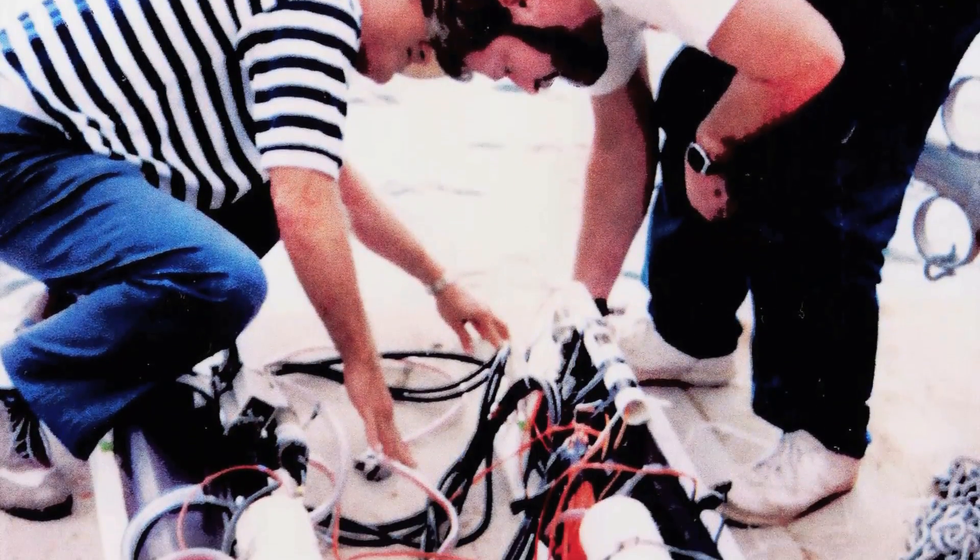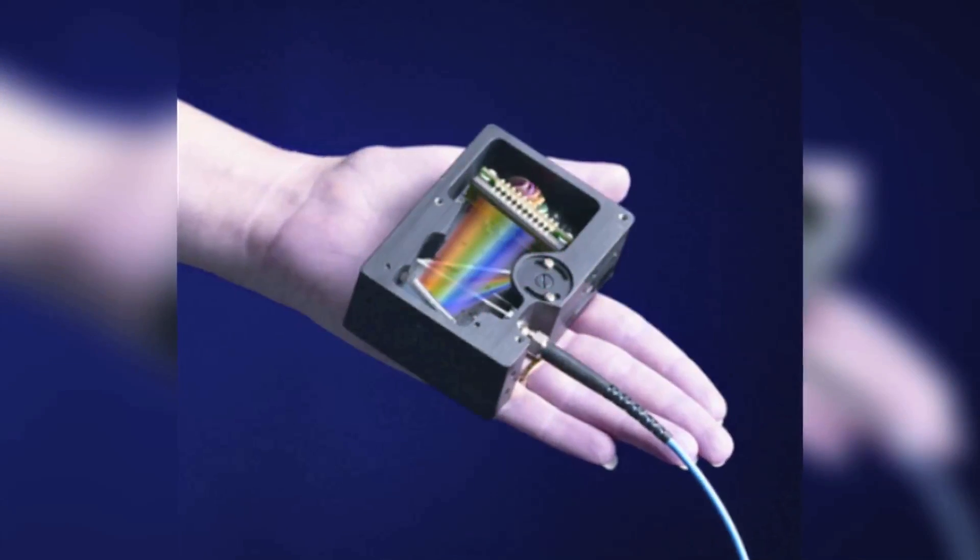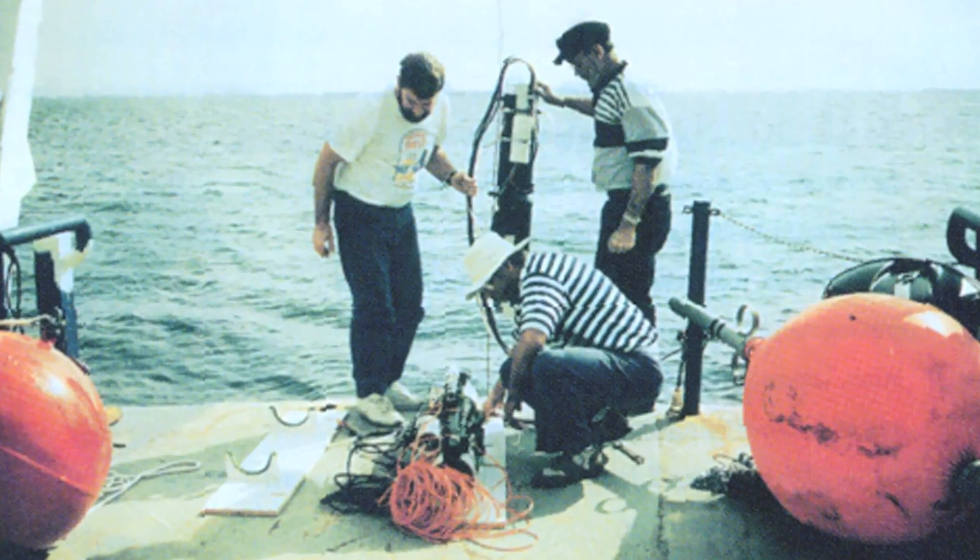The first measurement OceanOptics ever made was an environmental monitoring measurement. To make our measurements we had to have a spectrometer that would fit inside a buoy so we could monitor pH in real time to look at ocean acidification.